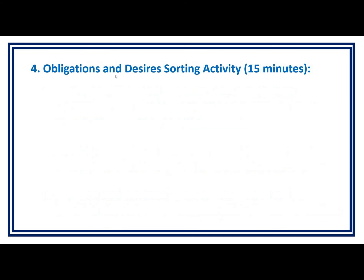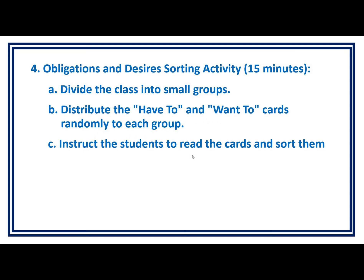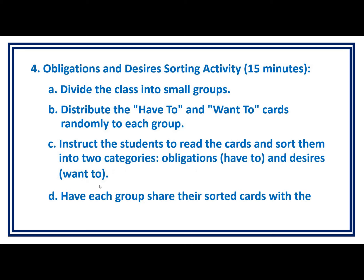4. Obligations and Desires Sorting Activity — duration: 15 minutes. Divide the class into small groups. Distribute the 'have to' and 'want to' cards randomly to each group. Instruct students to read the cards and sort them into two categories: obligations ('have to') and desires ('want to'). Have each group share their sorted cards with the class and discuss their choices.